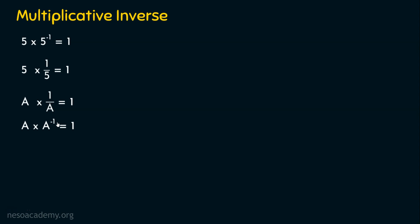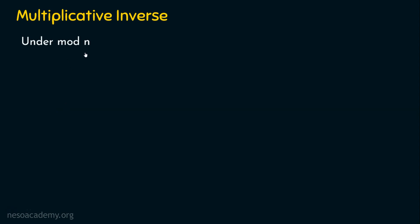The real challenge comes when modular arithmetic is involved. When we are dealing with a number mod n, the multiplicative inverse concept is different. If you have a number a, when a is multiplied by its inverse, and that product is divided by n, we should get a remainder of one. This is the idea of multiplicative inverse under modular arithmetic.